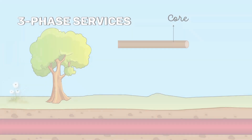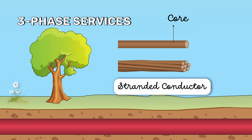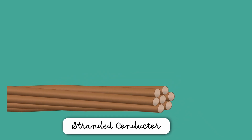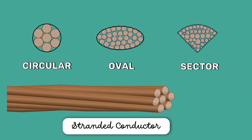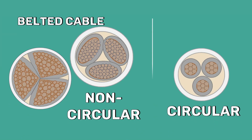Instead of a single solid conductor, we use stranded conductors for power transmission. Several thin wires called strands are twisted together. These stranded conductors are available in different designs including circular, oval, and sector-shaped. The belted cable may use non-circular stranded conductors to make better use of available space.